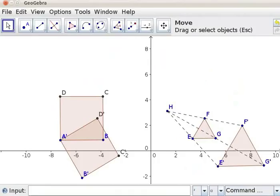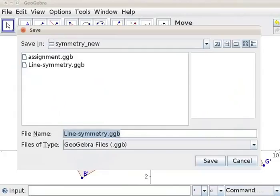You can enlarge the object as number of times as you wish by typing the value of factor. Let us save this file now. Click on File, Save As. I will type the file name as Dilate-Triangle. Click on Save.